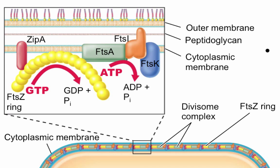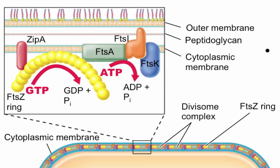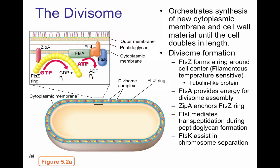Another important divisome component is FTSA, which forms a complex in the membrane and hydrolyzes ATP to provide energy for divisome assembly and function. ZIPA is connected to the plasma membrane and helps anchor the FTSZ ring to the membrane. FTSI is the enzyme transpeptidase, which mediates transpeptidation during peptidoglycan formation. Finally, FTSK helps separate the chromosome during cell division. Together, the divisome generates the area where the cell is going to divide.